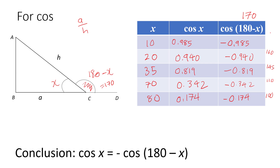In conclusion: cosine x equals negative cosine(180 minus x). Copy this down. Let's take a look at some questions — they are quite easy, something you have learned before.